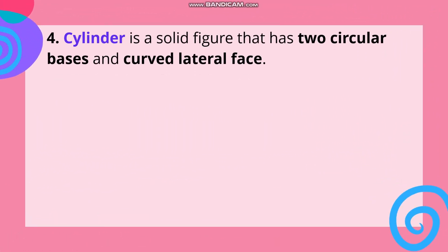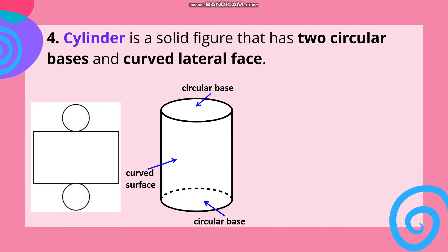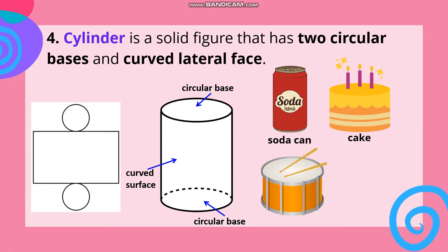Number four: Cylinder. A cylinder is a solid figure that has two circular bases and a curved lateral face. Madali itong tandaan dahil ito ay may dalawang circular base. This is the figure of a cylinder showing the curved surface, circular base at the top, and another circular base at the bottom. And this is the net of a cylinder. Examples of a cylinder include soda can, cake, drum, and milk can.